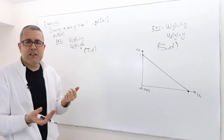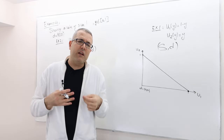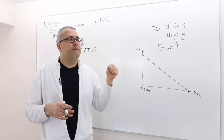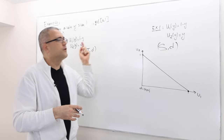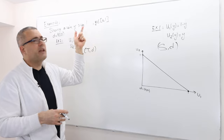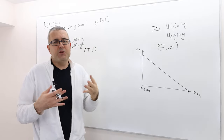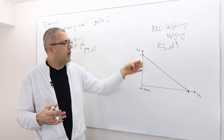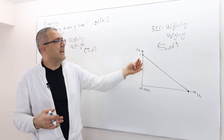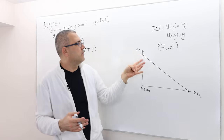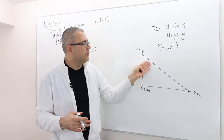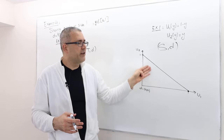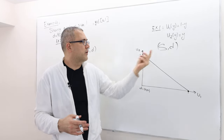Why is that so? Remember, in bargaining problems we assume that players can actually waste some of the surplus. They may negotiate and waste some part of it, and so they may end up at a payoff less than the utilities on this line. Therefore, the interior of this triangle is also part of set S.